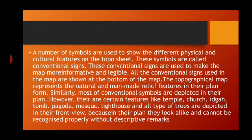The next heading is conventional symbols. On a map there are several colors, symbols, and signs for us to understand. All over the world, people use the same set of symbols so that travelers in different countries can read maps. It is not possible to draw a whole church or temple on a map, so symbols and signs are used to specify certain places, buildings, or natural features.